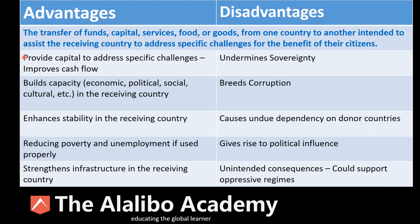The first advantage is that foreign aid provides capital to address specific challenges and improve cash flow. When money comes to a country, it improves cash flow, which is very important. Cash flow pays salaries, improves infrastructure, and boosts the economy. Foreign aid can address challenges of infrastructure, education — building more schools — and health care, strengthening the health care of the country.